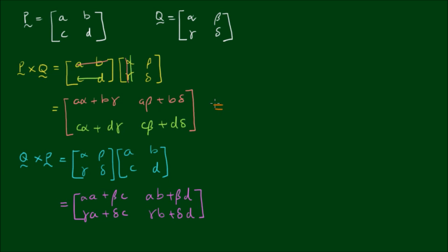Alright, so if we compare the product of P by Q and Q by P, we can clearly see that the entries, the elements, are different, at least algebraically. In some circumstances we may have the numbers arranged where if we flip the order of the matrices, the product indeed is the same. But generally speaking, we have to conclude here that matrix multiplication is not commutative.